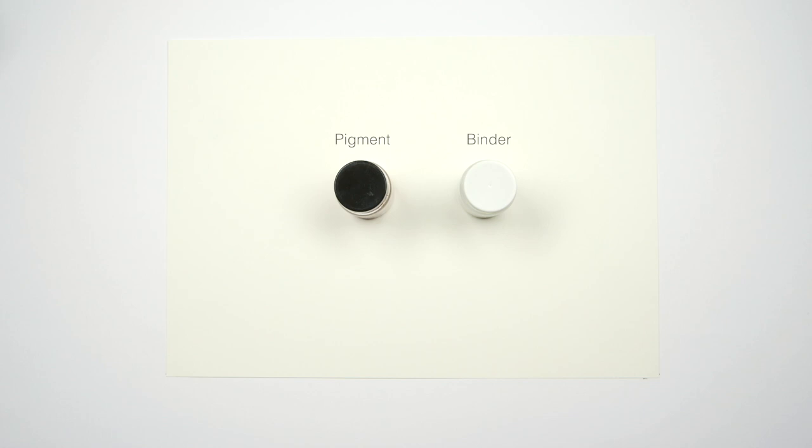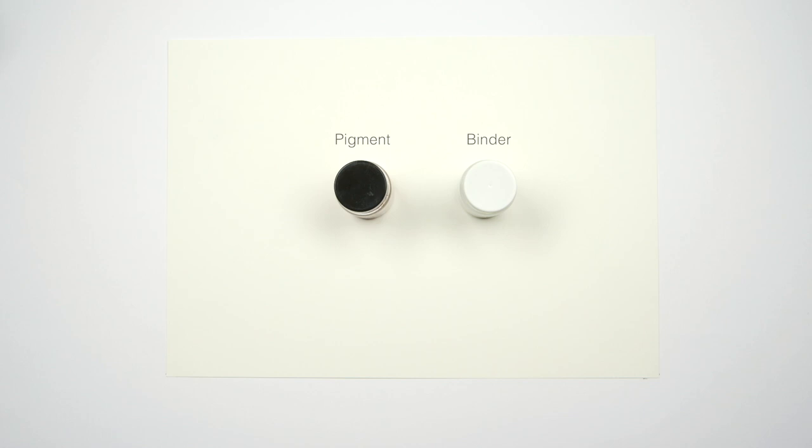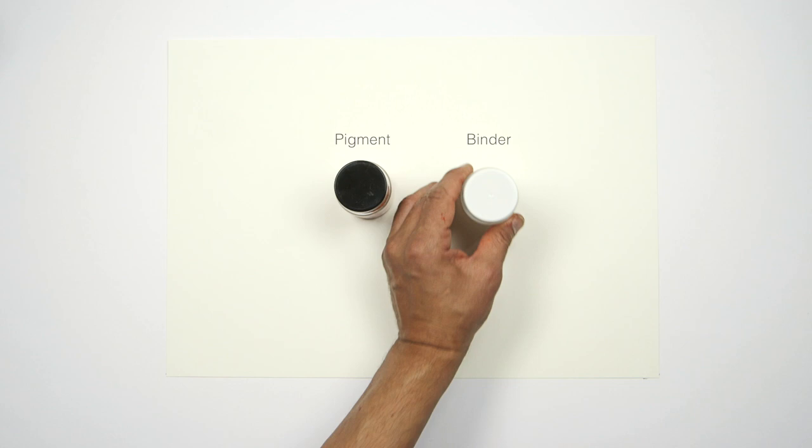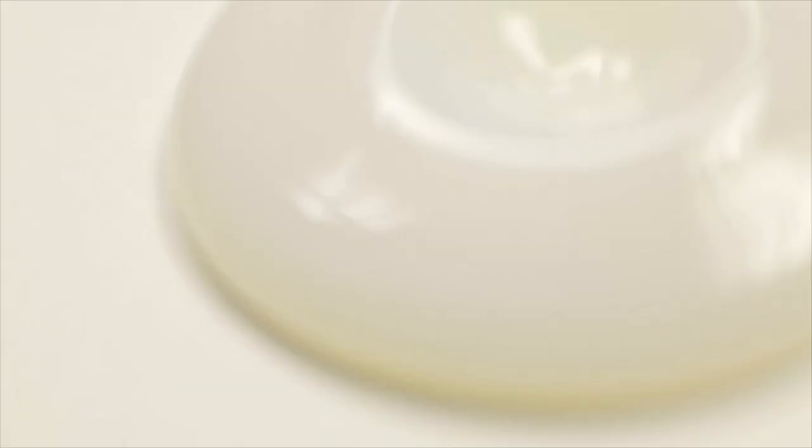However, Winsor & Newton's is unique in that it dries clear. Acrylic paint is made from pigment bound in an acrylic polymer emulsion. When water from the acrylic polymer emulsion evaporates, the remaining molecules lock the pigment into a solid, stable paint film.